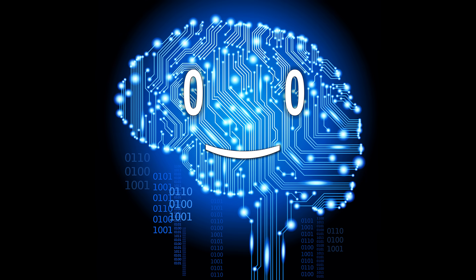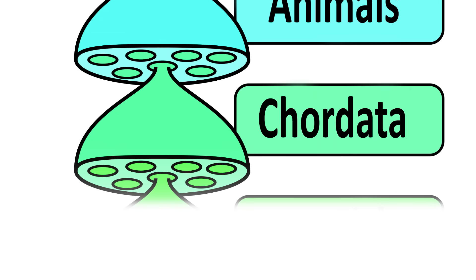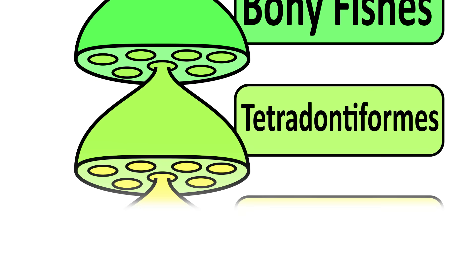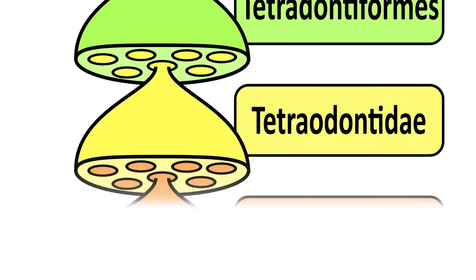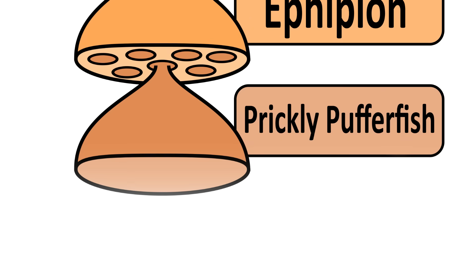For example, if we take the animalia kingdom, chordata phylum, class of bony fishes, tetraodontiformes order, tetraodontidae family, ephippion genus, you'll find the prickly puffer fish.